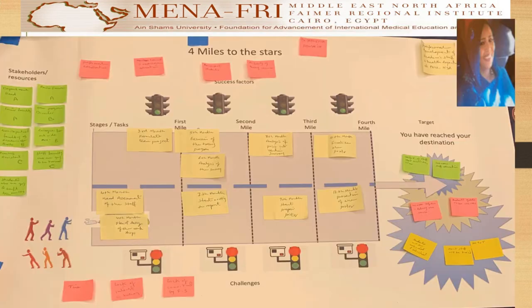The project planning framework states who are the stakeholders, what resources are available, and what is the target — what I want to achieve by the end of the project. Between resources, stakeholders, and reaching the destination, the success factors and challenges are described in detail.